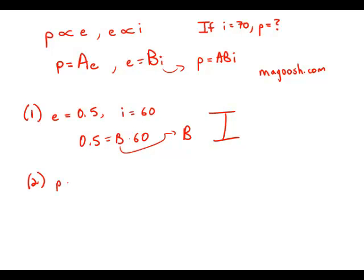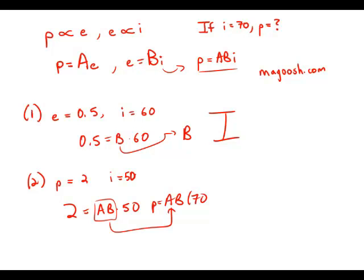Statement two tells us that when P equals 2, I equals 50. Then we can go directly to this equation: 2 equals AB times 50. That will allow us to solve for the product AB. And once we know that product AB, all we'd have to do is plug in 70 and we'd know what P was. We'd know the production index. So this statement by itself would allow us to solve for the numerical value of the production index, making it sufficient.